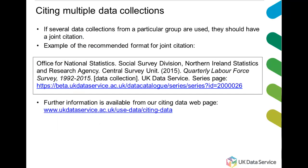You may wish to cite several datasets from the same group of data collections. Each data collection needs to be cited individually; however, if the data collections form a discrete entity, they may be grouped into a generic. One or more of these groups may form a series. If several data collections from a particular group are used, they should have a joint citation. The UK Data Service has a format for such joint citations, and here is an example of one.